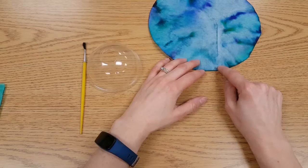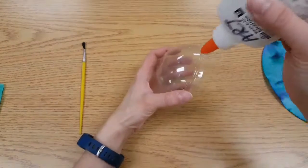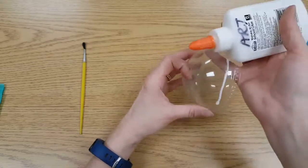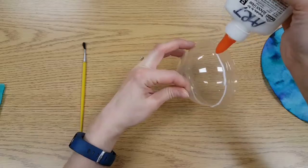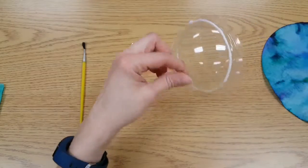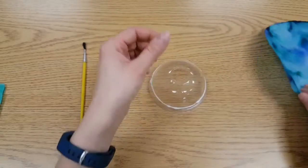This will be the top and on your little dome you're going to take your glue and close to the bottom edge make a line of glue. You can't set it down on the table while you're spinning it around. So I put a line of glue all the way around.